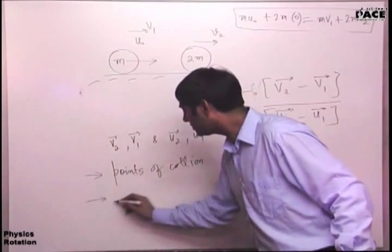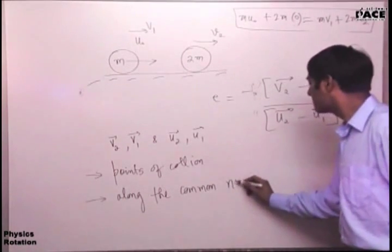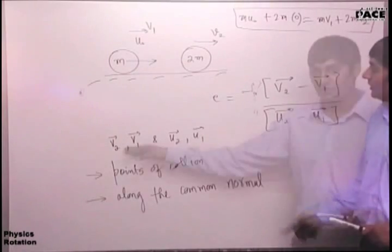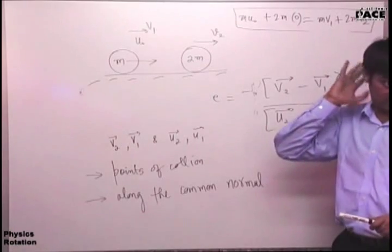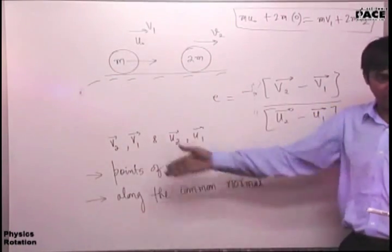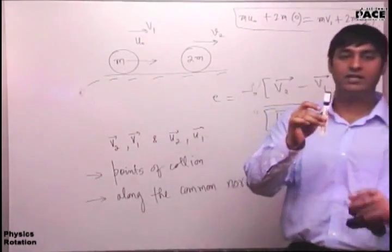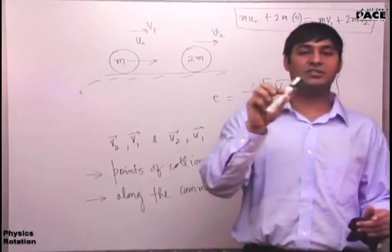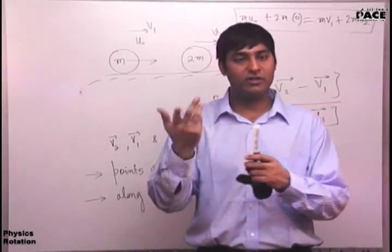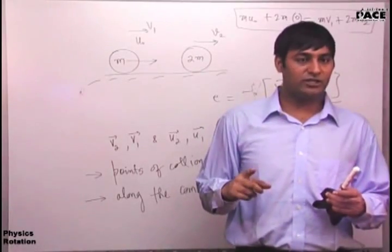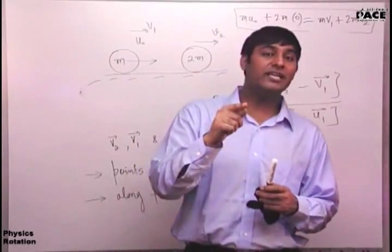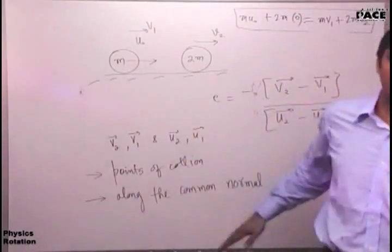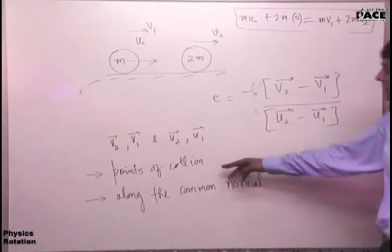One more important thing: these velocities are along the common normal - the perpendicular direction to the surfaces that collide. When a rigid body has both translation and rotation, the velocity of the point of collision is found using rigid body theorems. We find the linear velocity of that point of collision, and only the component along the common normal is used in the coefficient of restitution formula.